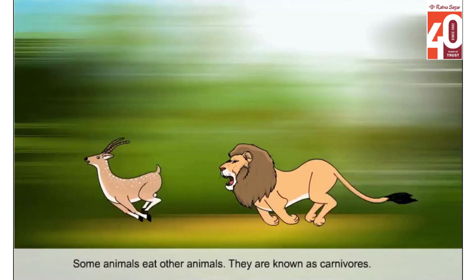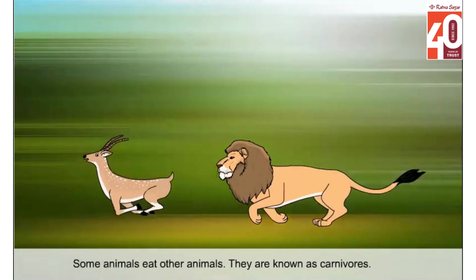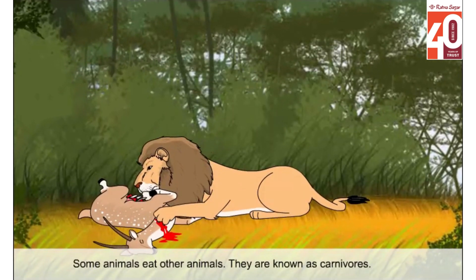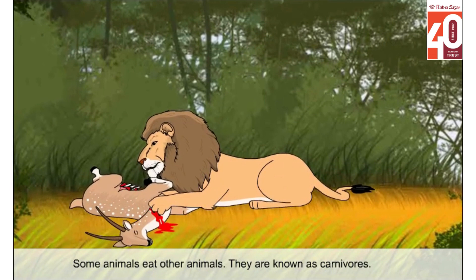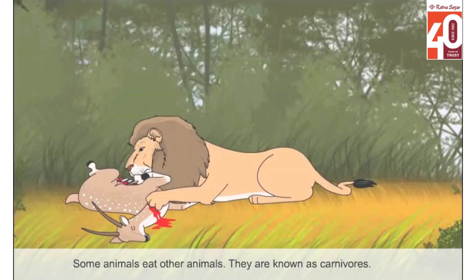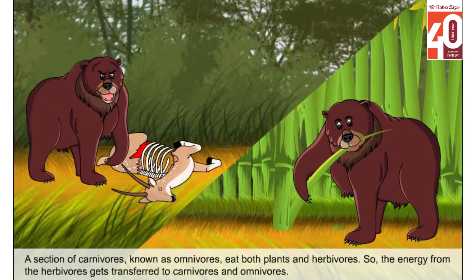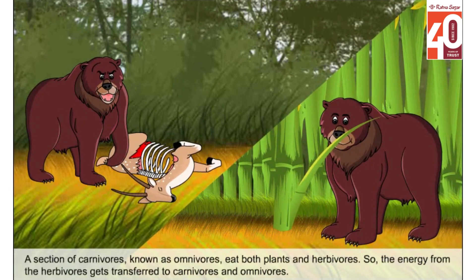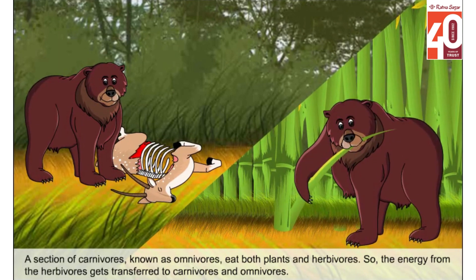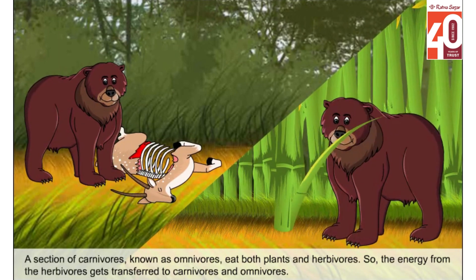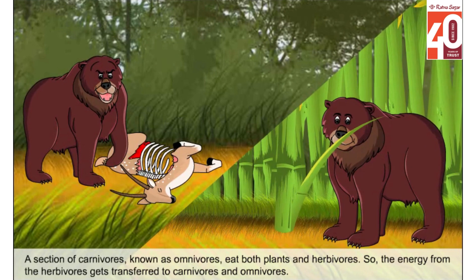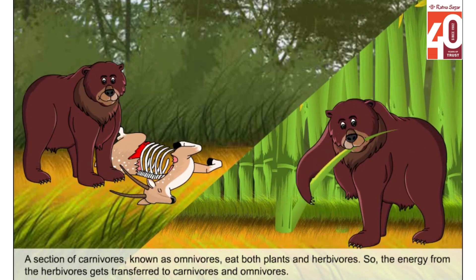Some animals eat other animals. They are known as carnivores. A section of carnivores known as omnivores eat both plants and herbivores. So, the energy from the herbivores gets transferred to carnivores and omnivores.